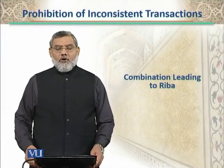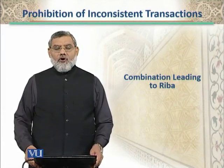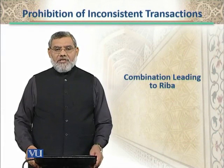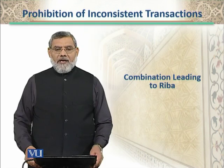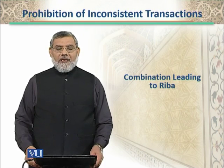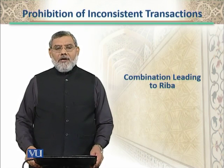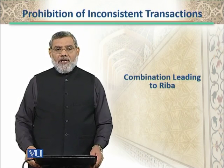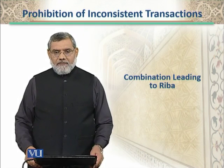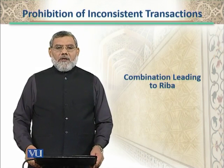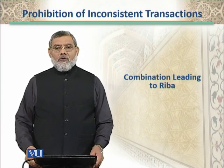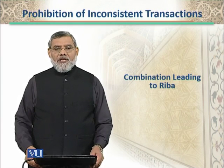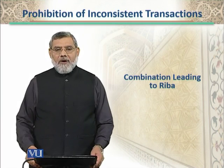One of the prominent forms of unlawful combination of transactions and contracts is where a contract clearly leads to Riba or undue benefit to one of the two contracting parties. We will explain in this presentation how the combination leads to or results in Riba.